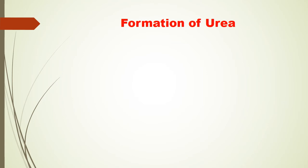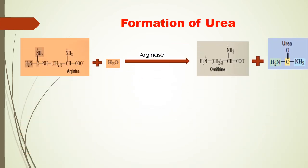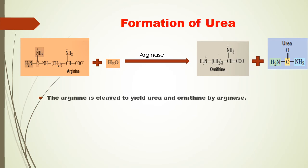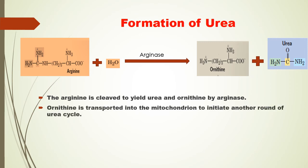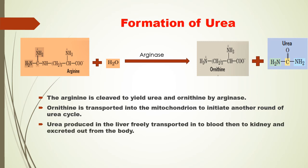Formation of urea. The arginine is cleaved to yield urea and ornithine. This reaction is catalyzed by arginase. Ornithine is transported into the mitochondrion to initiate another round of the urea cycle. Urea produced in the liver is freely transported into the blood and then to the kidney, where it is excreted out from the body.